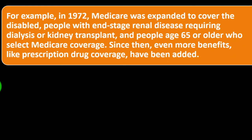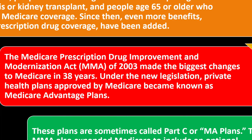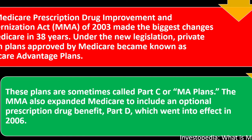For example, in 1972 Medicare was expanded to cover the disabled, people with end-stage renal disease requiring dialysis or kidney transplant, and people age 65 or older who select Medicare coverage. Since then, benefits like prescription drug coverage have been added. The Medicare Prescription Drug Improvement and Modernization Act (MMA) of 2003 made the biggest changes to Medicare in 38 years. Private health plans approved by Medicare became known as Medicare Advantage — sometimes called Part C or MA plans. The MMA also expanded Medicare to include optional prescription drug benefit Part D, which went into effect in 2006.